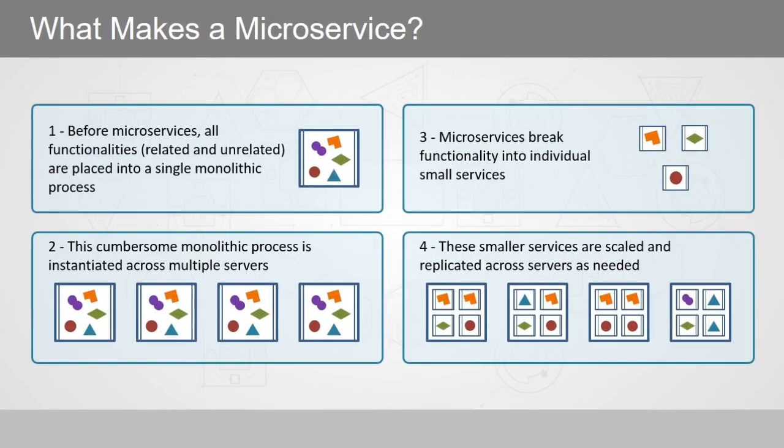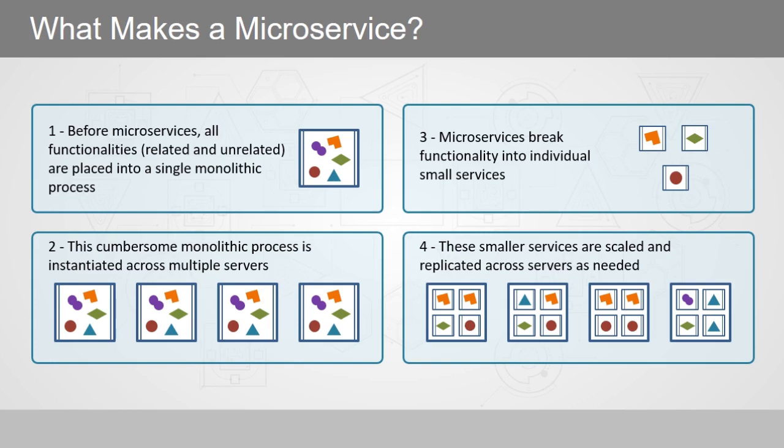Microservices in general is an architecture that basically takes a large service, called a monolith, and breaks it down into small shareable components. In a traditional monolith design, all the functionality is placed into a single process. This process is then instantiated over multiple servers. This results in code being instantiated across servers whether the code is run or not. A microservices architecture breaks this down into smaller chunks of code that is instantiated across servers as needed.